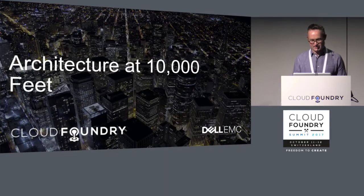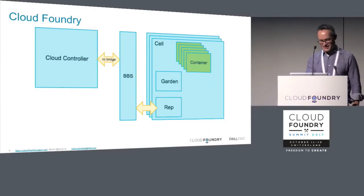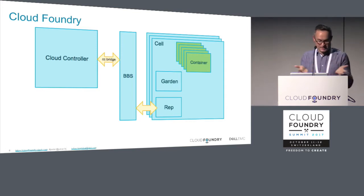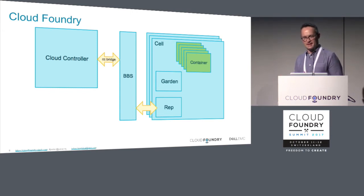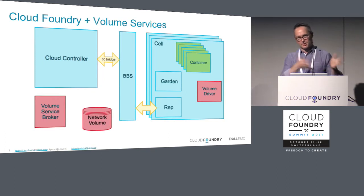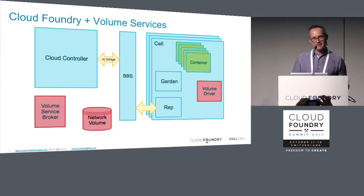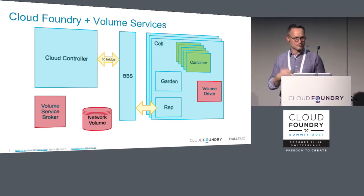Looking at how this works at a very high level — this slide's a little out of date because we no longer have a CC bridge sitting between Cloud Controller and BBS, but the overall gist is still correct. Essentially, this is what Cloud Foundry looks like with no volume services: you've got the Cloud Controller managing things, and it's negotiating with BBS in Diego to place workloads onto Diego cells.